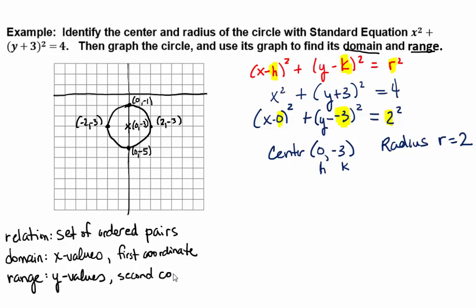And the range is the second coordinate or the y values. Now when the ordered pairs are just listed out, it's pretty easy to identify the domain and range. You just list all the x values, you got your domain, and list all the y values, you got your range.